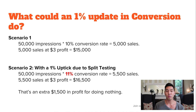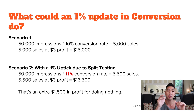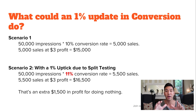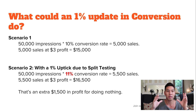Let me jump to the next slide and explain why this is super important. Why is it so powerful to have an uptick in conversions, even if it's just 1%? In scenario one, you have an item that gets 50,000 impressions — meaning how many people visit your product page — and a 10% conversion rate. So 10% of the 50,000 people visiting your listing are buying it, giving you 5,000 sales. With 5,000 sales at a $3 profit, you're going to have $15,000 in profit.